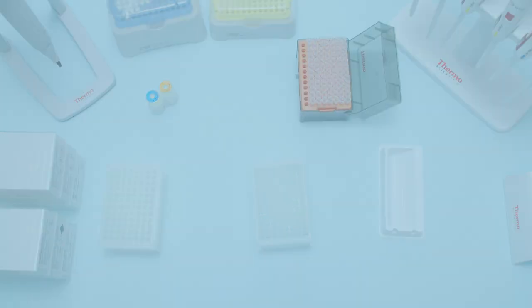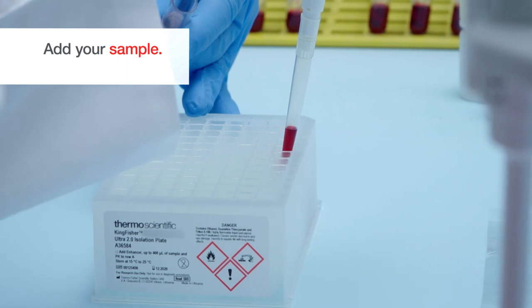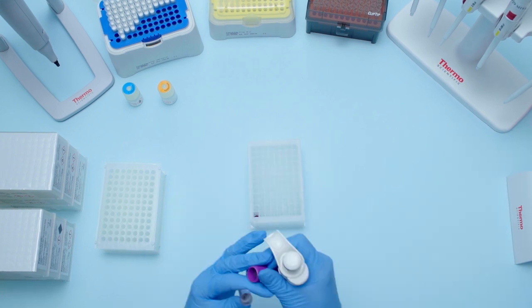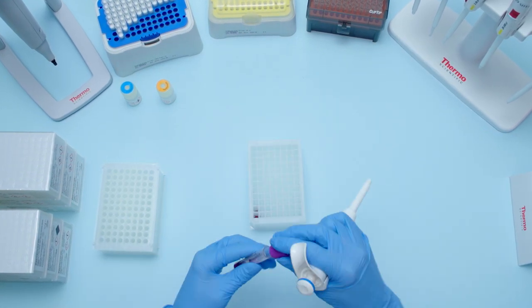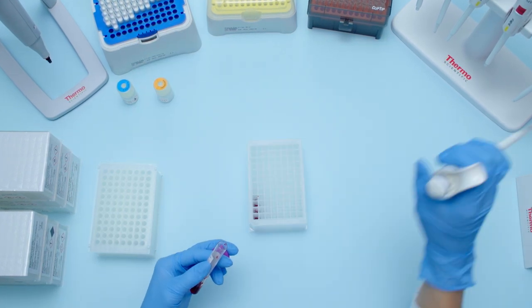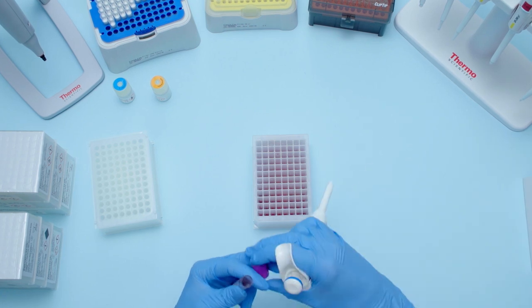In this next step, add your input sample. The Kingfisher FlexReady Pre-Filled Plates can accommodate between 50 and 400 microliters of sample for blood and saliva. Buffy coat and buccal swabs require a slightly modified protocol to process these special sample types.